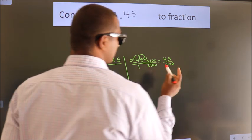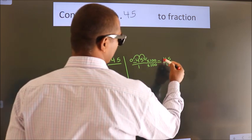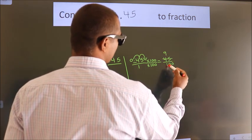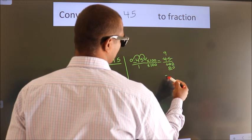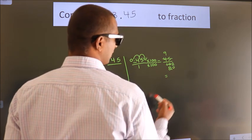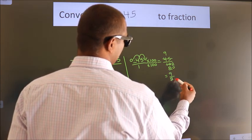Now I cancel with 5. 5 into 9, 5 into 20, this 0 as it is down. So the fraction we got is 9 by 20.